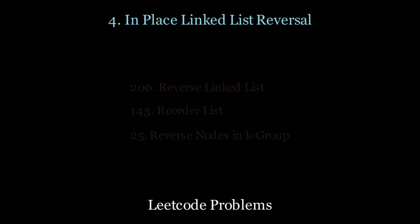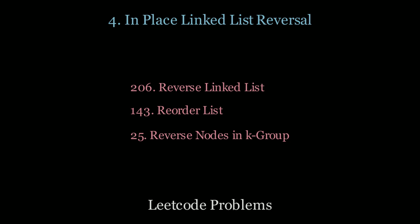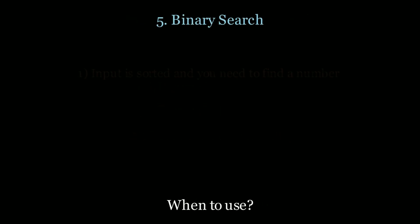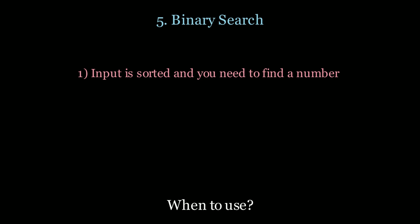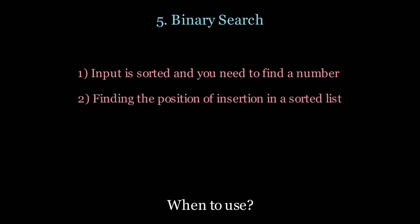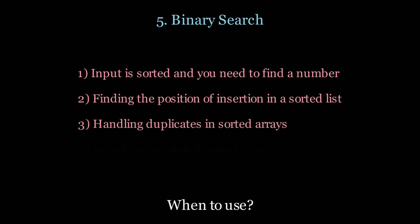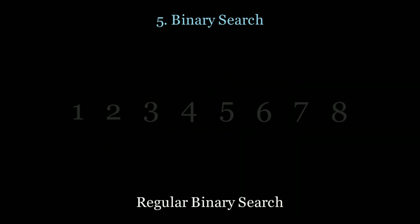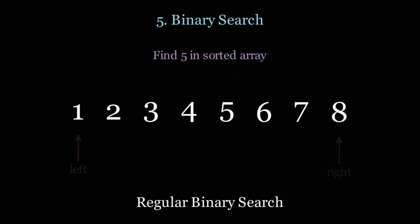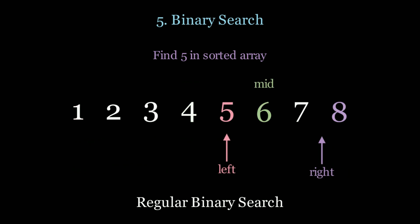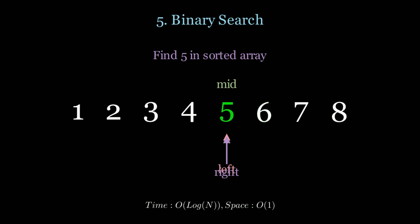For more practice, solve the following LeetCode questions. Next up, binary search. Use binary search if your input is sorted and you need to find a number, if you need to find the position of insertion in a sorted list, if you need to handle duplicates in sorted arrays, or if you need to search in rotated sorted arrays. In classic binary search: if the mid value is less than the target, move the left pointer; if greater, move the right pointer — until you find the target in O(log n) time.